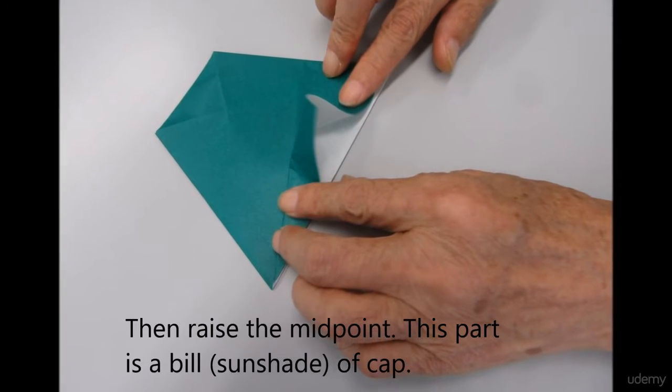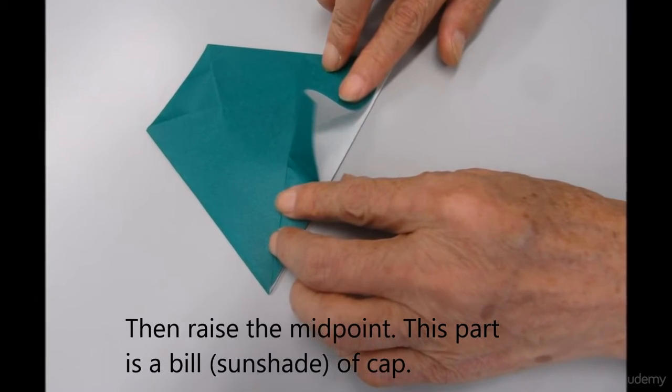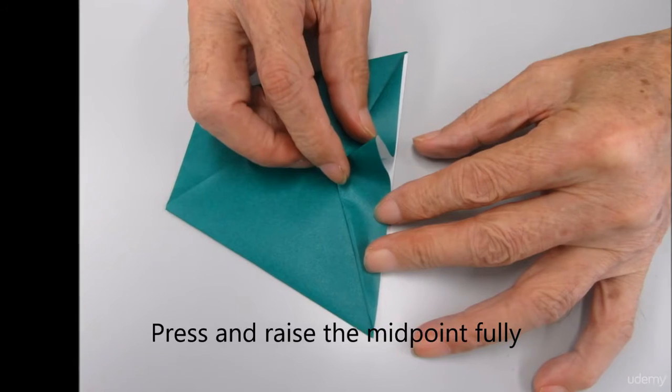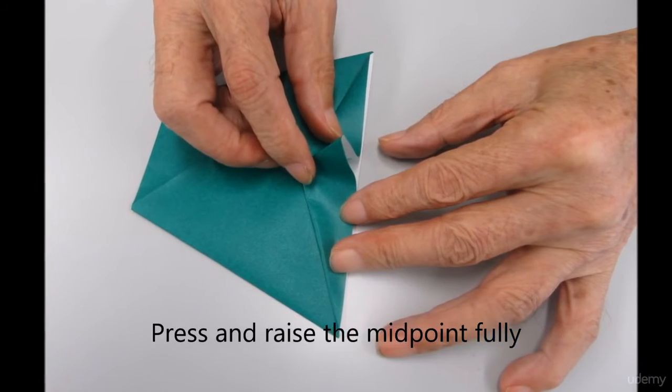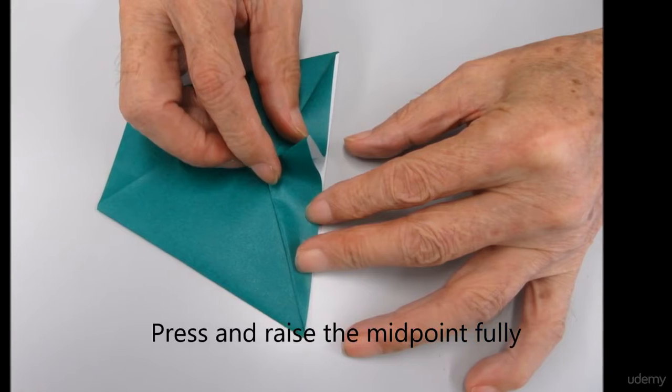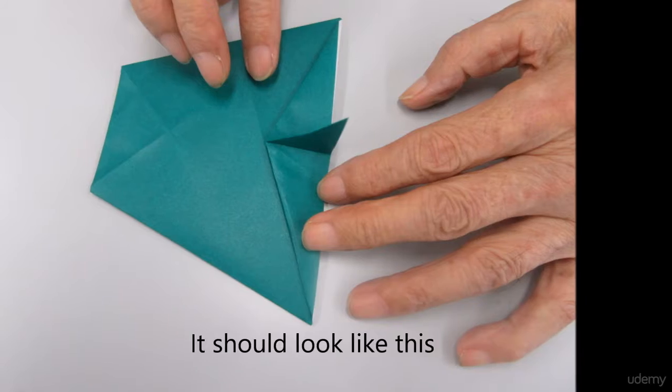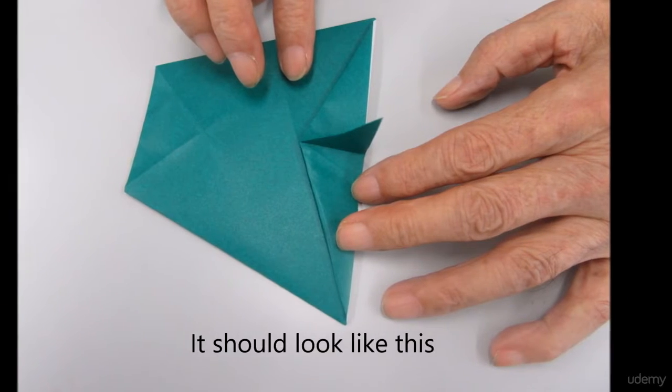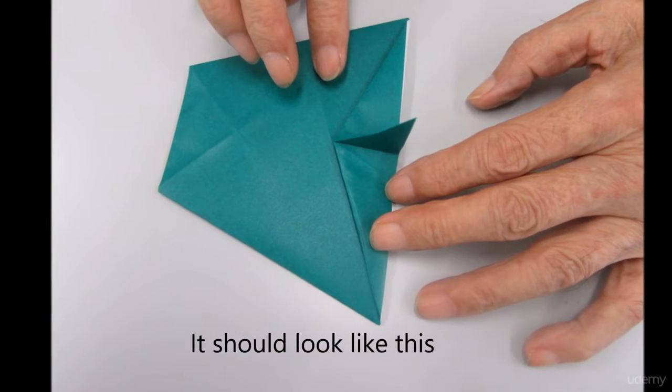Actually what is doing is making a bill, a sunshade. Press and raise the midpoint. Now it should look like this.